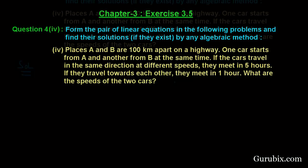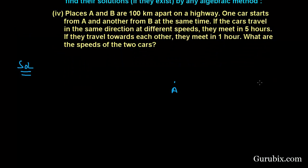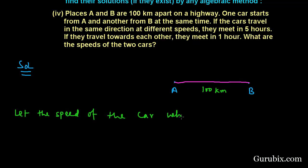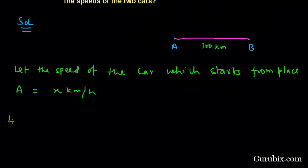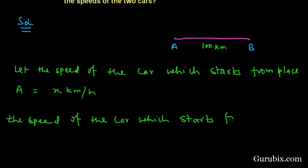Let us solve it. This is place A and this is place B, and we are given that these places are 100 kilometers apart — the distance between these two places is 100 kilometers. Let the speed of the car which starts from place A be x kilometers per hour, and the speed of the car which starts from place B be y kilometers per hour.